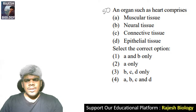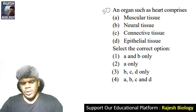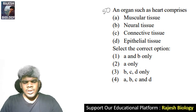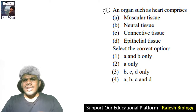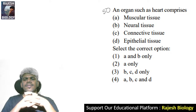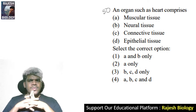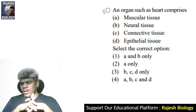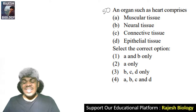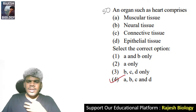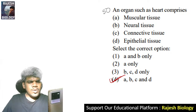Last question — the students who give the right answer for the last question will definitely crack the NEET examination! An organ such as the heart comprises what? Options are muscular tissue, neural tissue, connective tissue, epithelial tissue. The right answer is option four — all of the above, since the heart contains all four types of tissues.